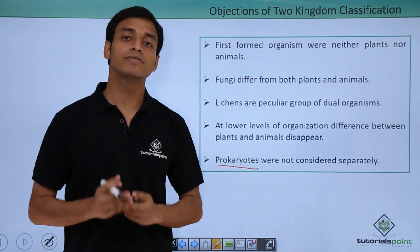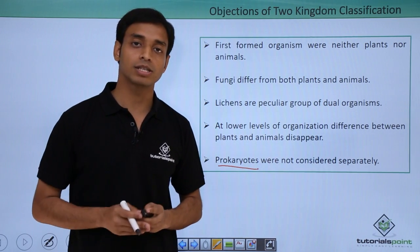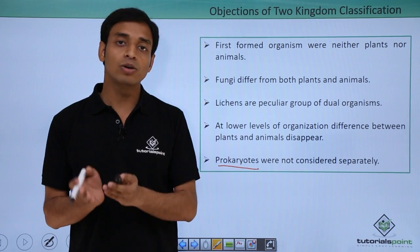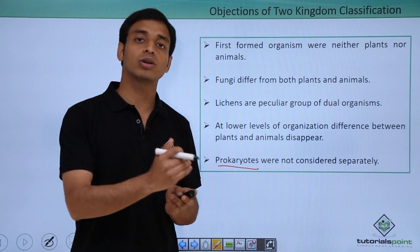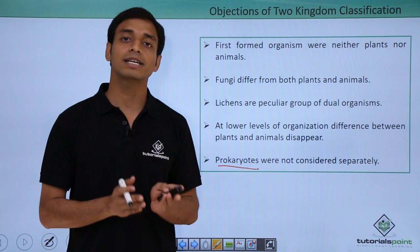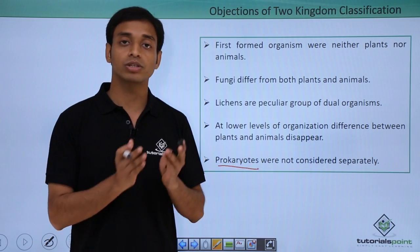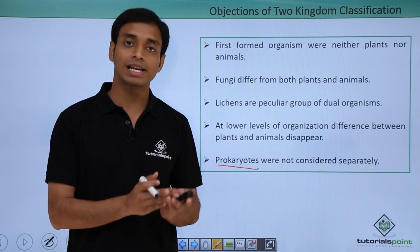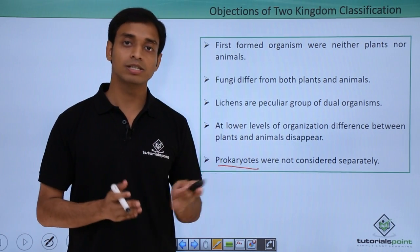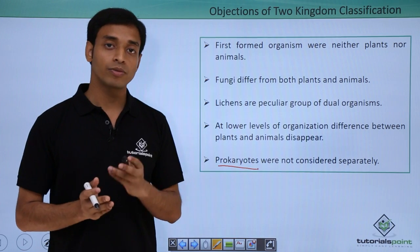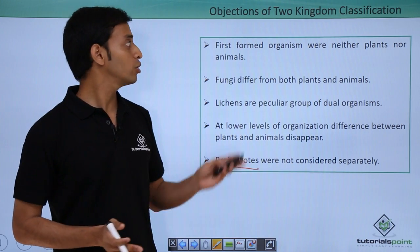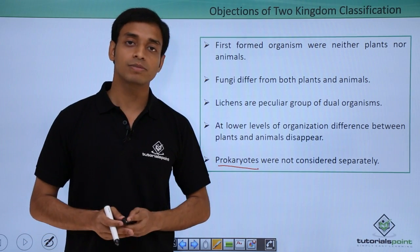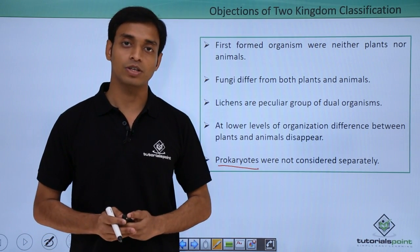In this video we have talked about the two kingdom system of classification. We have seen how Linnaeus tried to classify organisms into two groups — plants and animals — and what characteristics he considered while classifying them. We have also discussed the objections which were raised against the two kingdom system of classification.